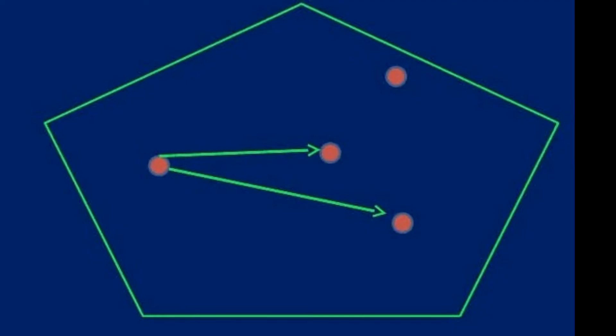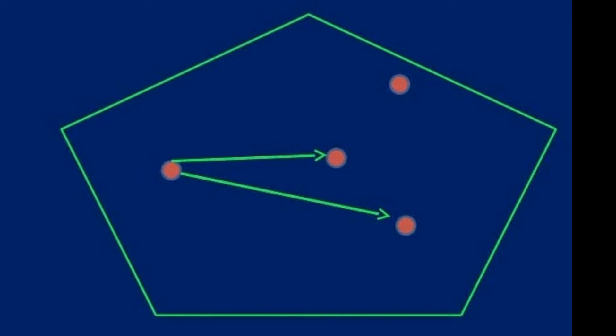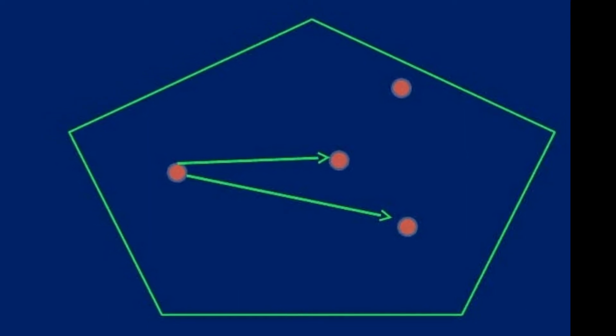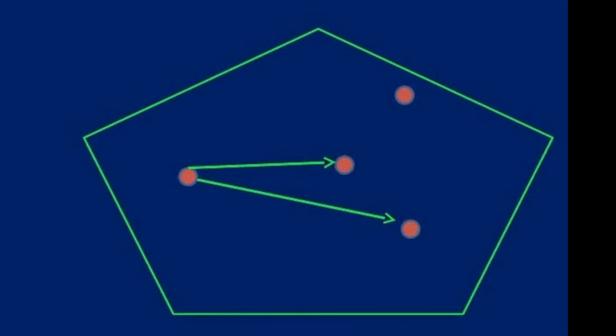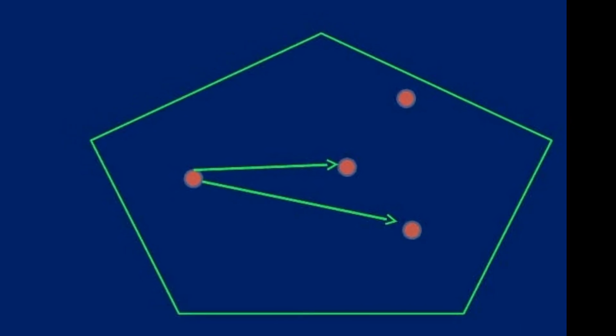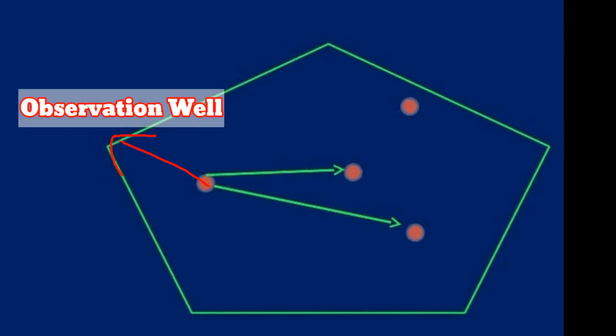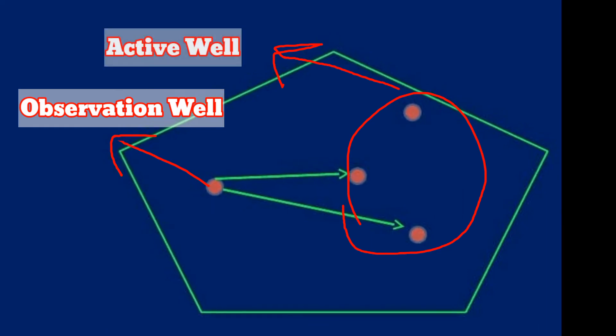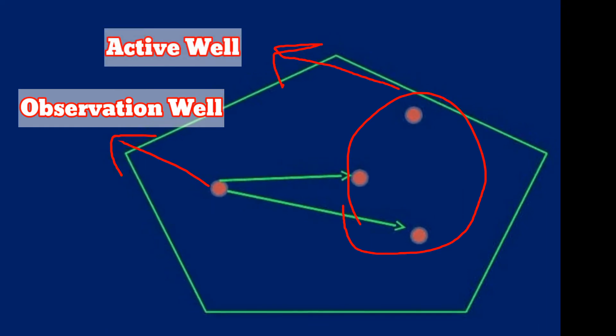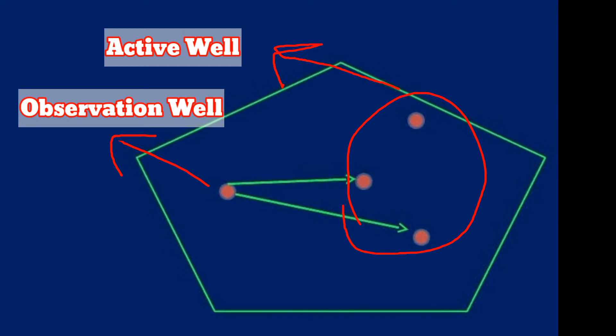Let's discuss the procedure of conducting the interference test. For conducting the interference test in the reservoir, two or more than two wells are needed. One well is the observation well and the other two, three, four, depending on the job's nature, are active wells.